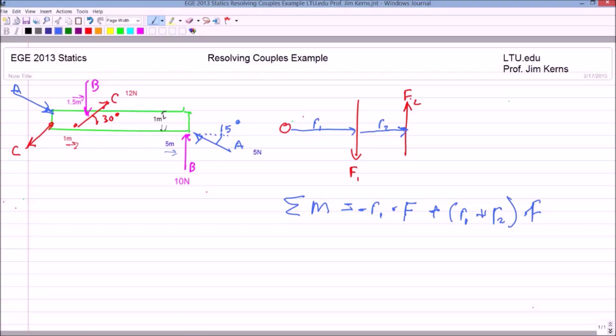So if I put those together and solve for F, I get that sum of the moments is equal to negative R1 plus R1 plus R2 times F. And of course the negative R1, the plus R1 cancel each other out, so I'm left with R2 times F.